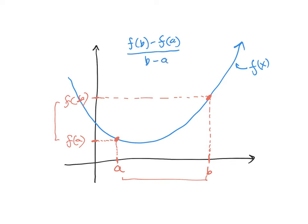We write the average rate of change as f of b minus f of a over b minus a. You may also know that by another name: m, the slope. If I draw a line through these two points, it's y2 minus y1 over x2 minus x1. This particular line has a special name — it's called a secant line. Similar to geometry, when a line passes through a circle and hits it in two points, that's a secant line. And there's another kind of line that just bumps the circle at one point, called a tangent line.